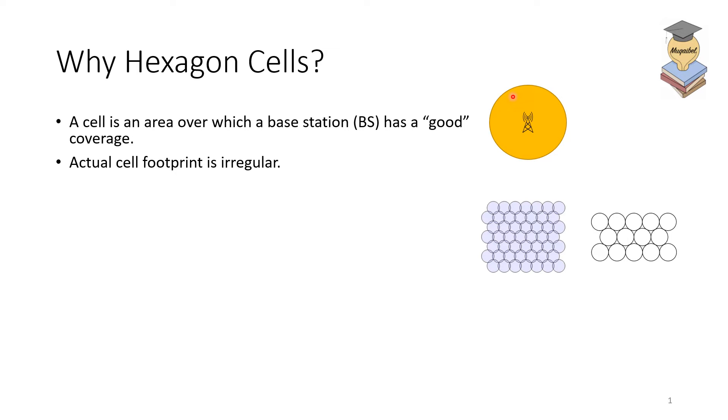What is the shape of this cell? An actual cell footprint would be, of course, irregular. The reason for that is because we have shadowing, as we have seen before, we have other multipath issues, and an actual footprint would be irregular.